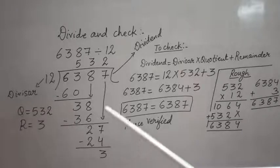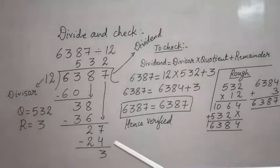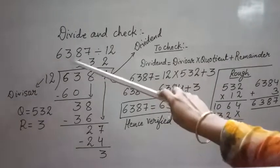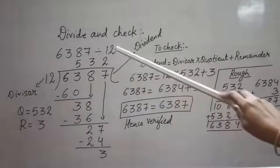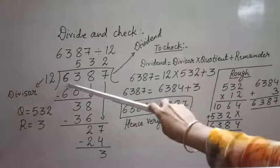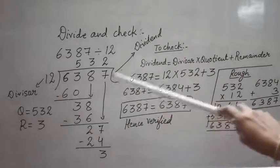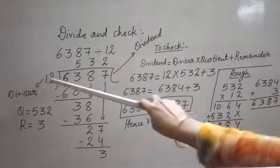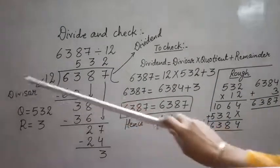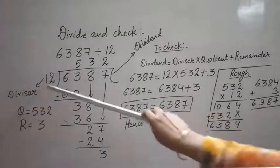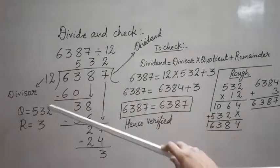Finally, one more question. I have taken here 6387 to be divided by 12. So 6387 is my dividend and 12 is my divisor. Here I am having a two-digit divisor, and I told you...